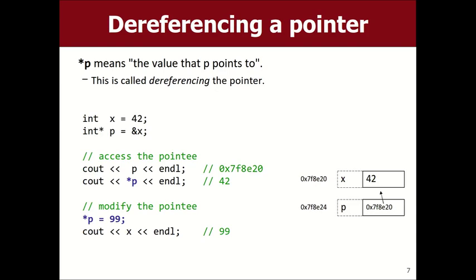Where else have we seen this concept — one variable modifying another? Passing by reference. Pointers were invented first; references came later to make the syntax easier. With references, you add an ampersand to your parameter and it kind of just works. Pointers are basically rougher references in some ways, but it's a similar idea: this variable's main purpose is to talk about, look at, or change another variable's value.